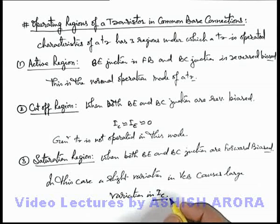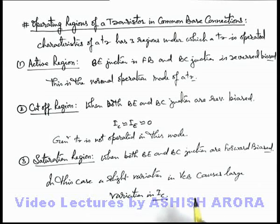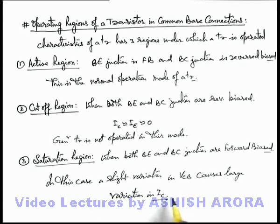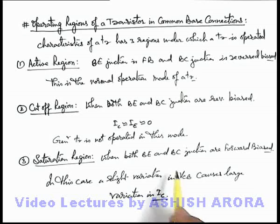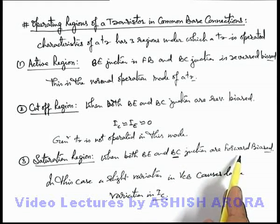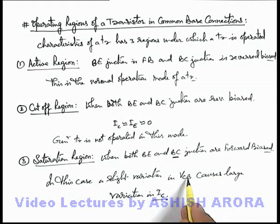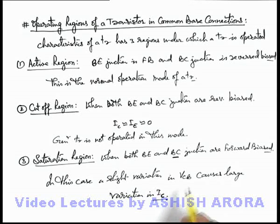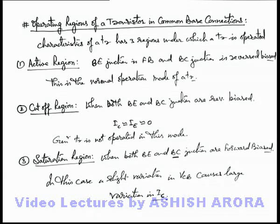If we just have a look once again at the output characteristic of the transistor in common base connection, we can see the zone to the left of the IC axis, when VCB is negative, or when the base-collector junction is also forward biased. We can see that a slight increase in VCB changes the value of IC significantly. This is the zone when we call the transistor is acting in the saturation region.